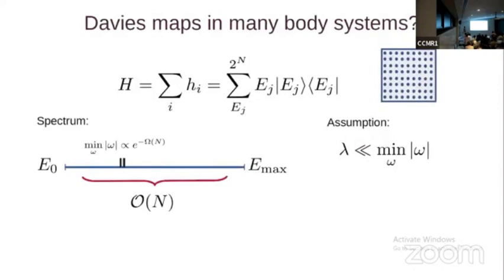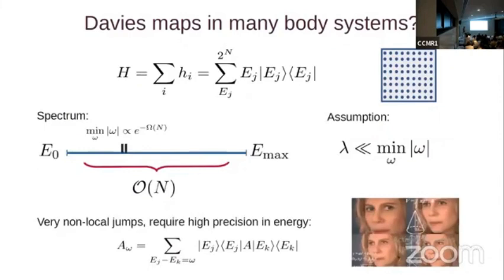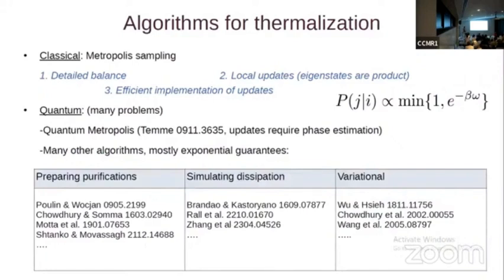However, there are some things we don't like too much about the Davies generator, which is the fact that the terms in this Lindbladian are very much non-local. So, you know, if you look at the Metropolis algorithm, it's mostly based on local flips, classically, right? And it requires a lot of precision and energy if you would actually want to implement this on a quantum computer. So it's kind of difficult to simulate these Davies generators. And the fact that the jumps are very non-local makes it difficult to analyze them and get rigorous results on, let's say, how long it takes to thermalize for these Davies generators. And so in some sense, they do have this detailed balance like the classical Metropolis algorithm, but, you know, like we're missing these other ingredients, right?